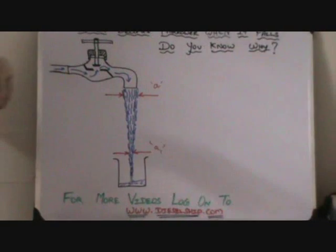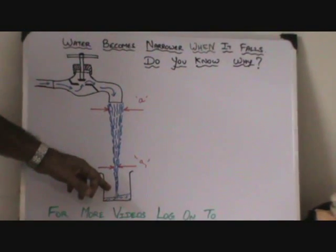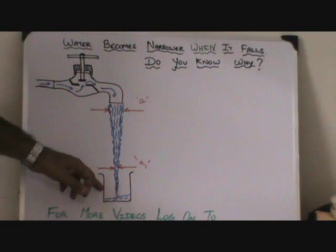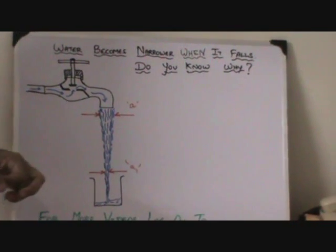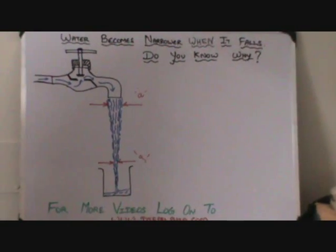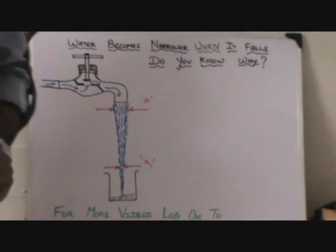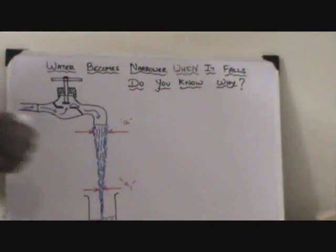Obviously, when you open any tap and watch it, the area keeps on decreasing and the speed keeps on increasing. The reason why speed increases is due to gravity. Every object on Earth with a weight is acted upon by gravity, and the acceleration due to gravity increases the velocity of water.